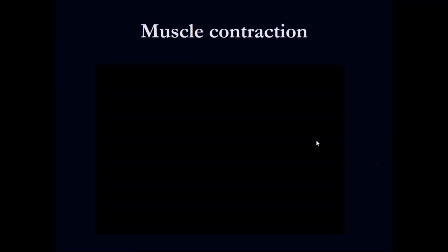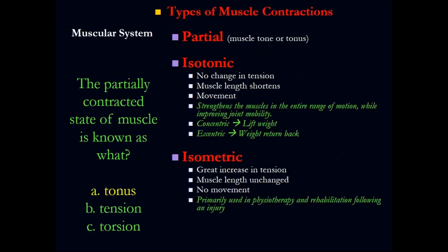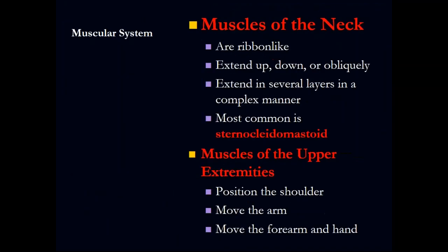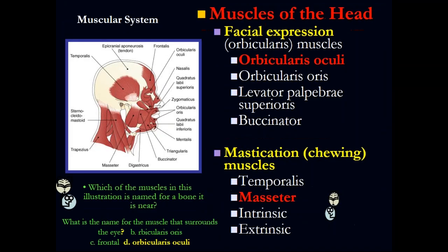Muscles you need to remember: the orbicularis oculi is around the eye; the orbicularis oris is around the mouth. For mastication, remember the masseter muscle.